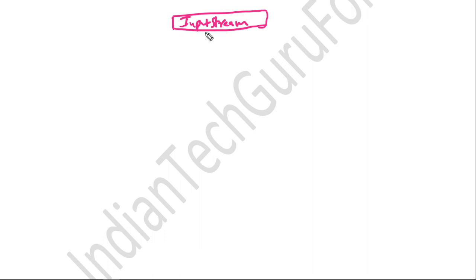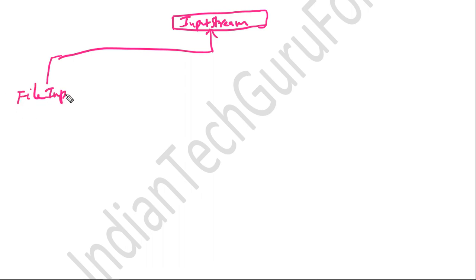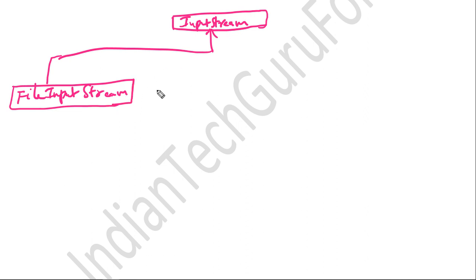For file manipulation purposes, derived from the InputStream class, we have the FileInputStream class. The FileInputStream class is used to manipulate data stored in files as well as retrieve data from files. Another class derived from the InputStream class is the ByteArrayInputStream class, which is used to manipulate byte arrays and perform input operations.